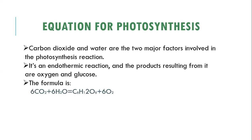Photosynthesis is an endothermic reaction, and the products resulting from it are oxygen and glucose. Oxygen is released into the air, and glucose is used as energy for plant growth and development. The formula shows carbon dioxide reacting with water in the presence of sunlight energy to produce glucose and oxygen as the final products.